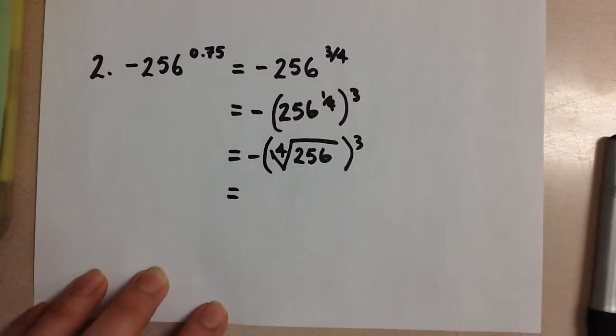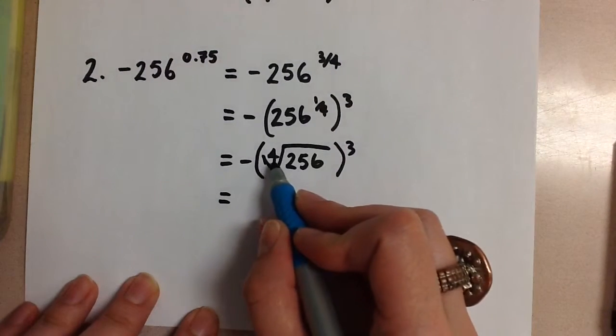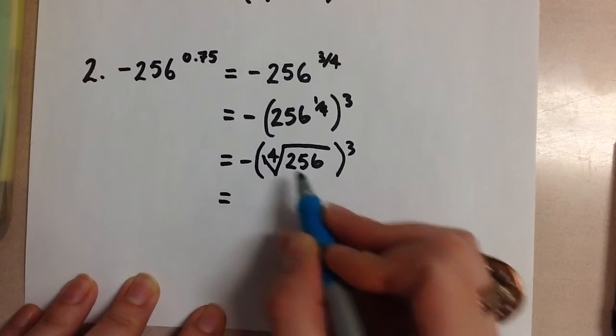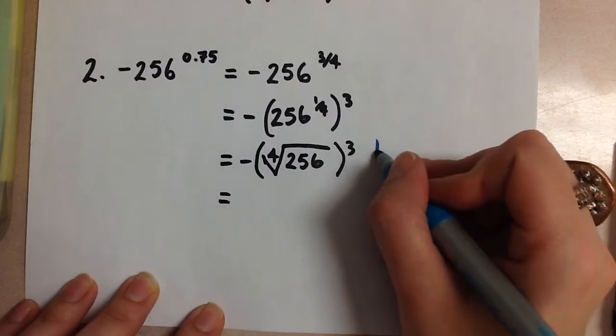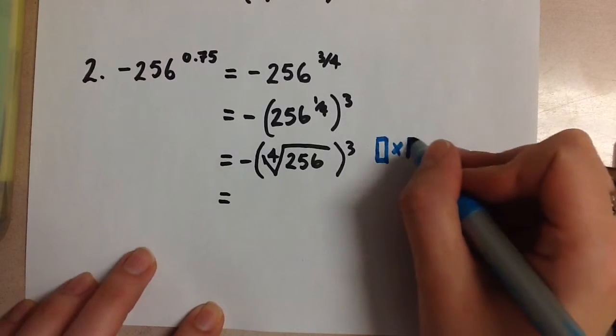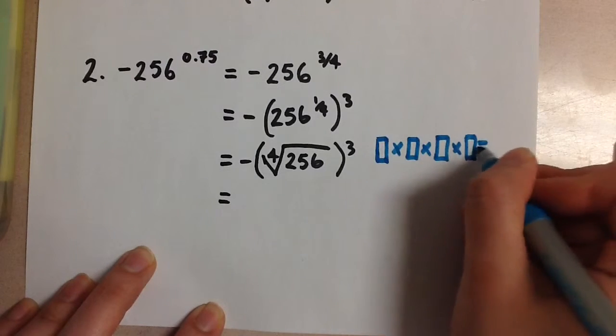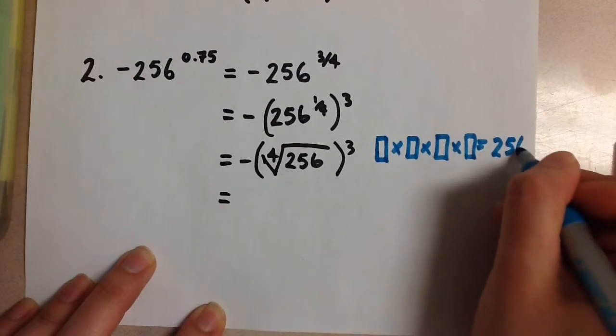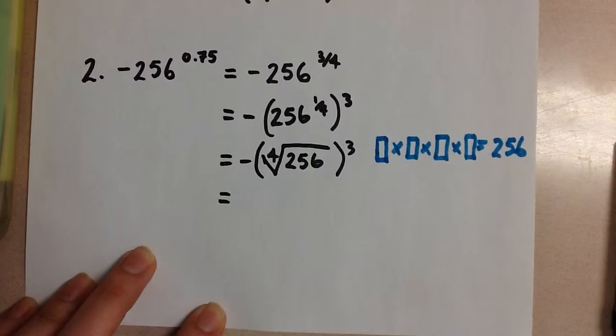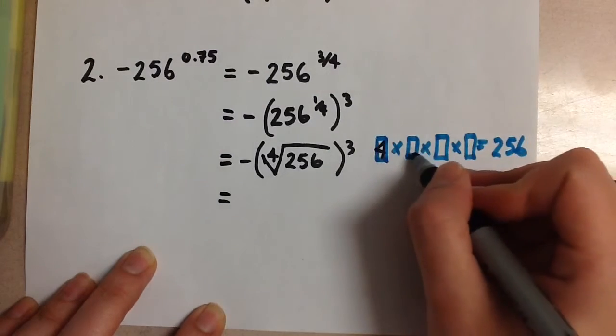This is asking us: what number multiplied by itself 4 times will give you 256? Visually, this looks like a number times a number times a number times a number equals 256. The answer is 4.